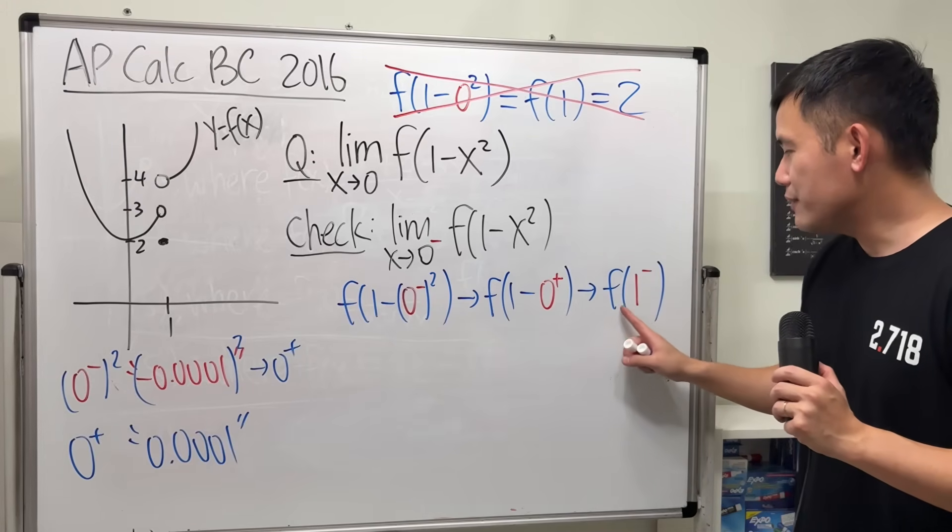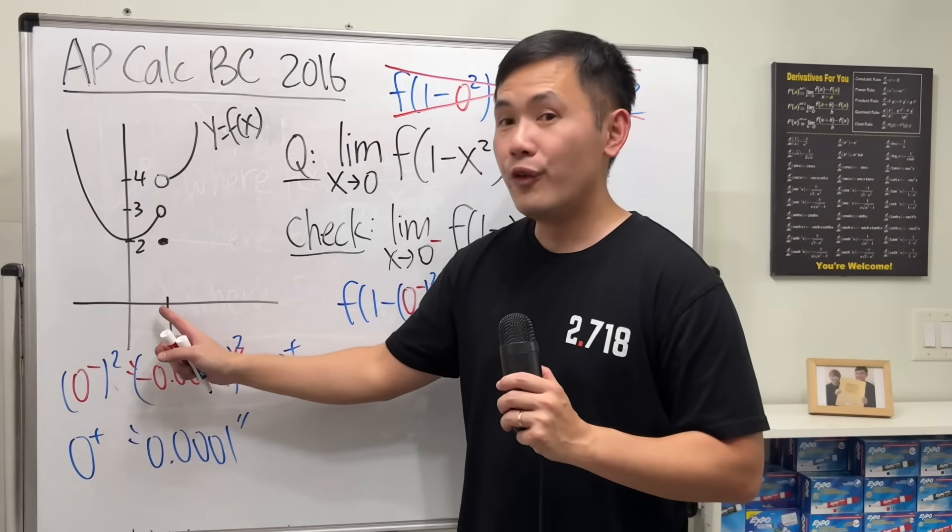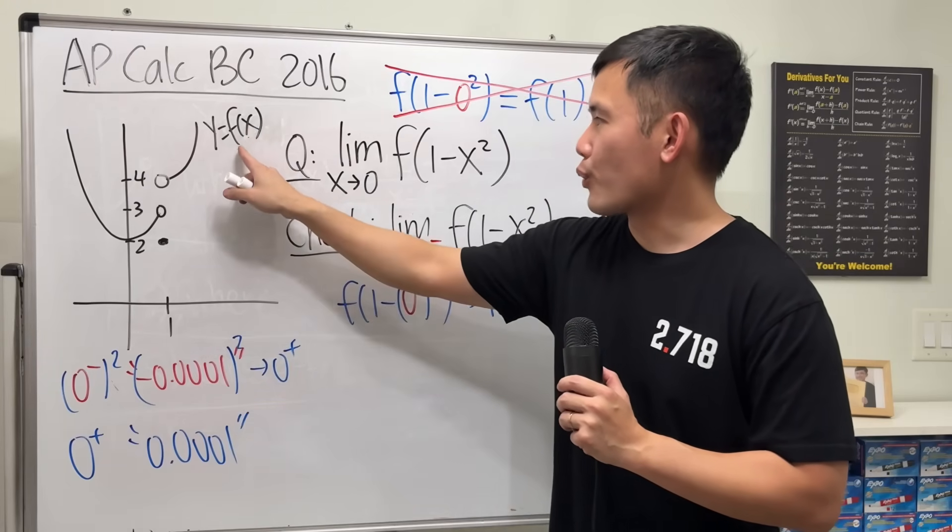This is like 0.99999. So, now, if you look at this f(1⁻), what you have to do is, we are approaching 1 from the left-hand side. Again, right here, even though this graph, it's not the same as that,